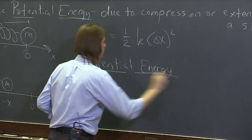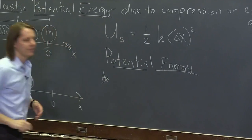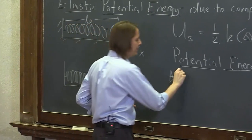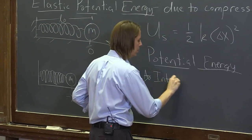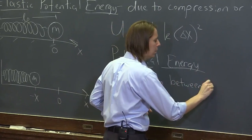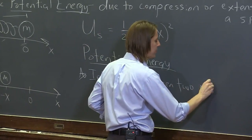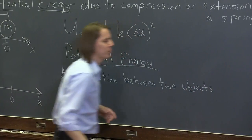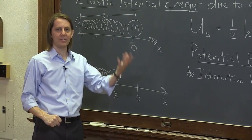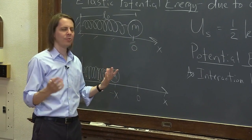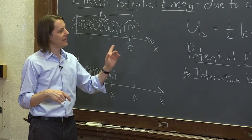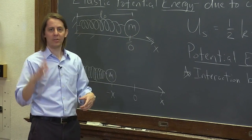Some potential energy bullets here. One is it's always an interaction between two objects. That's what's different—one thing that's different between kinetic and potential. Kinetic energy is a property of a single object: it has a velocity, it has a mass, it has kinetic energy. Potential always requires two: gravitational requires the Earth and the object for most of our calculations, and elastic requires the mass and the spring. They have to push on each other.